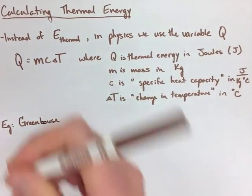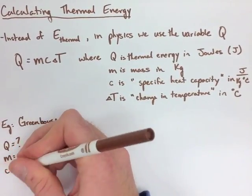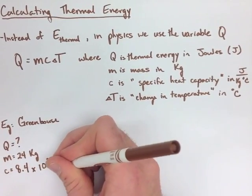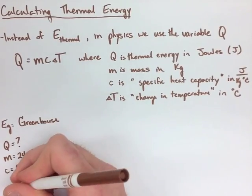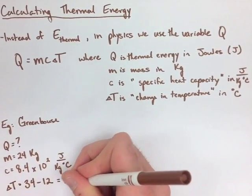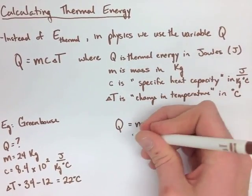In our first example that we look at, we have a greenhouse and it's changing temperature, and we need to find the thermal energy. So the mass is 24 kilograms. The specific heat capacity is 8.4 times 10 to the 2 joules per kilogram degrees Celsius, and we go from 34 to 12 degrees.